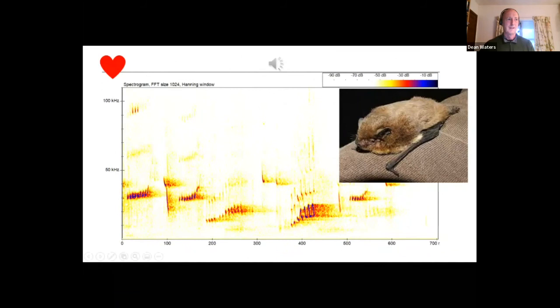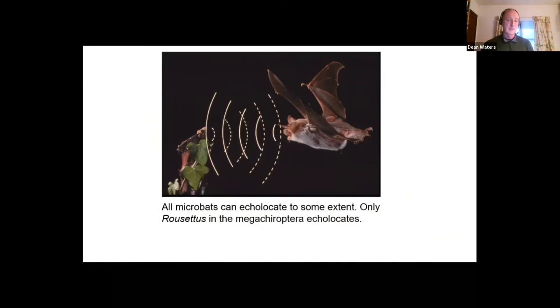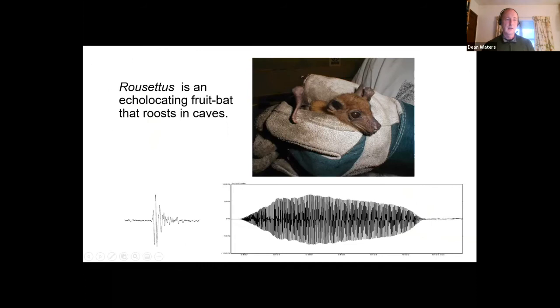Now all microbats echolocate to some extent—some are quiet, some are loud, some are high frequency, some are low frequency. But of the megabats, the Megachiropterans, it's only bats of the genus Rousettus that echolocate; most of the other ones don't. This is Rousettus, the Egyptian fruit bat. You can see it has very big eyes because rather than echolocating to find its prey, it uses vision—this very high sensitivity vision for flying around at night. But why does it echolocate? It echolocates because it roosts in caves. Most other fruit bats roost in trees, but Rousettus roosts at the back of caves where it's dark, so they've developed an echolocation system.